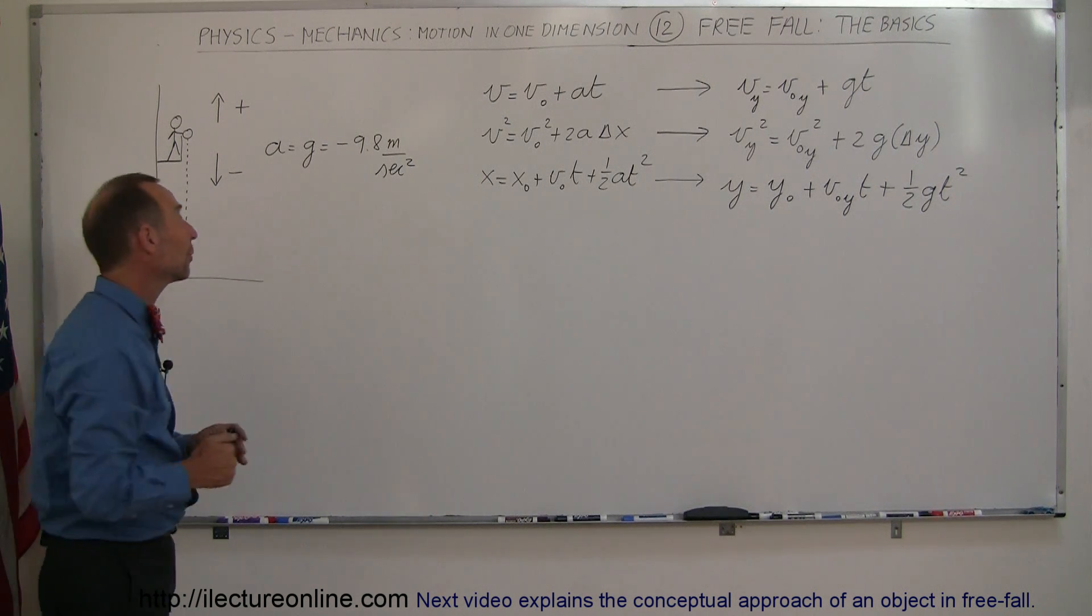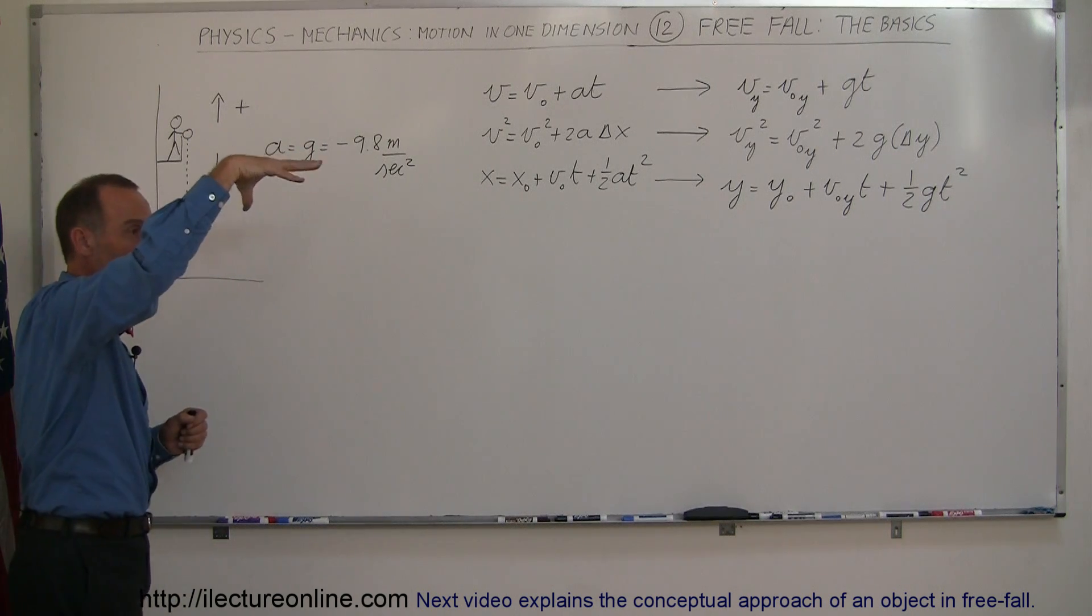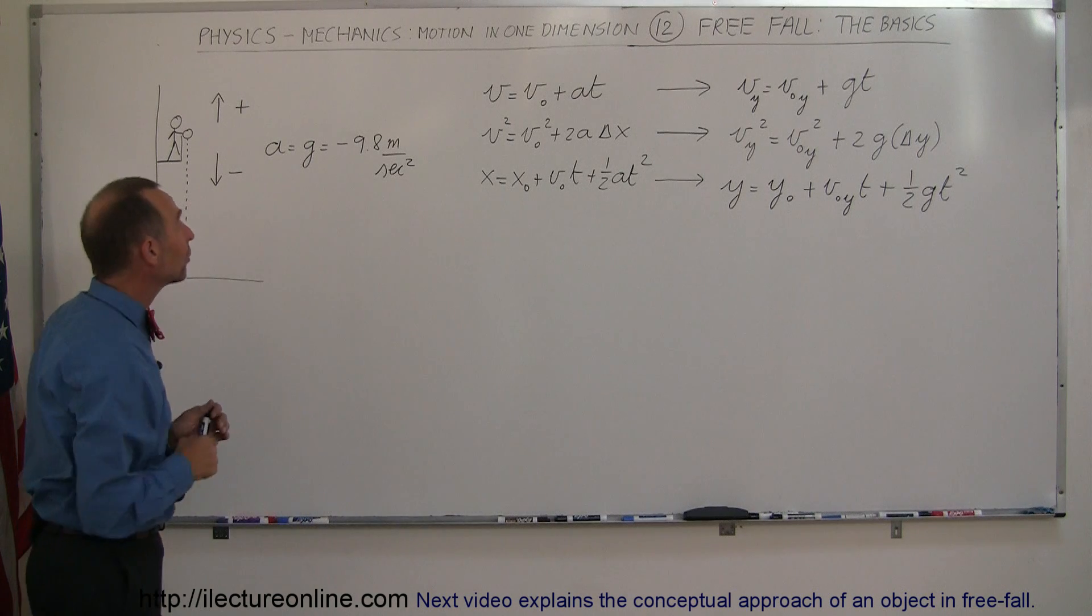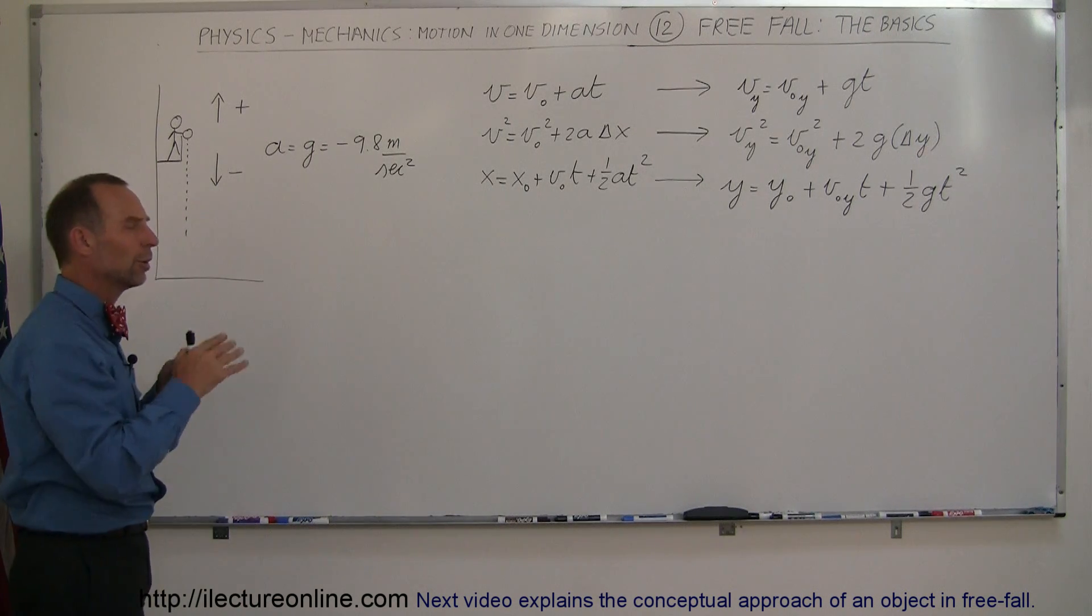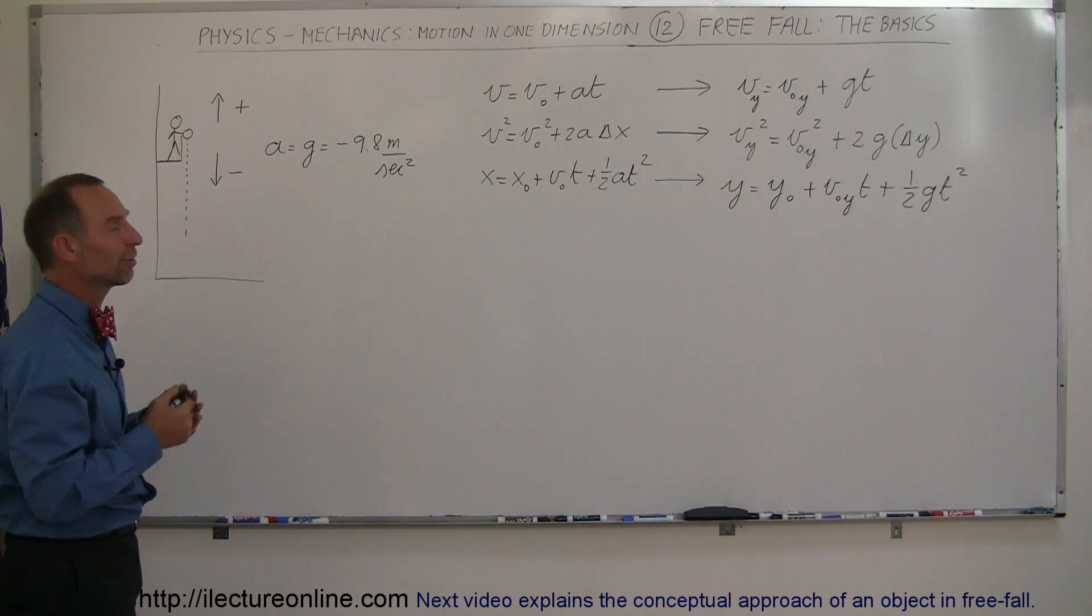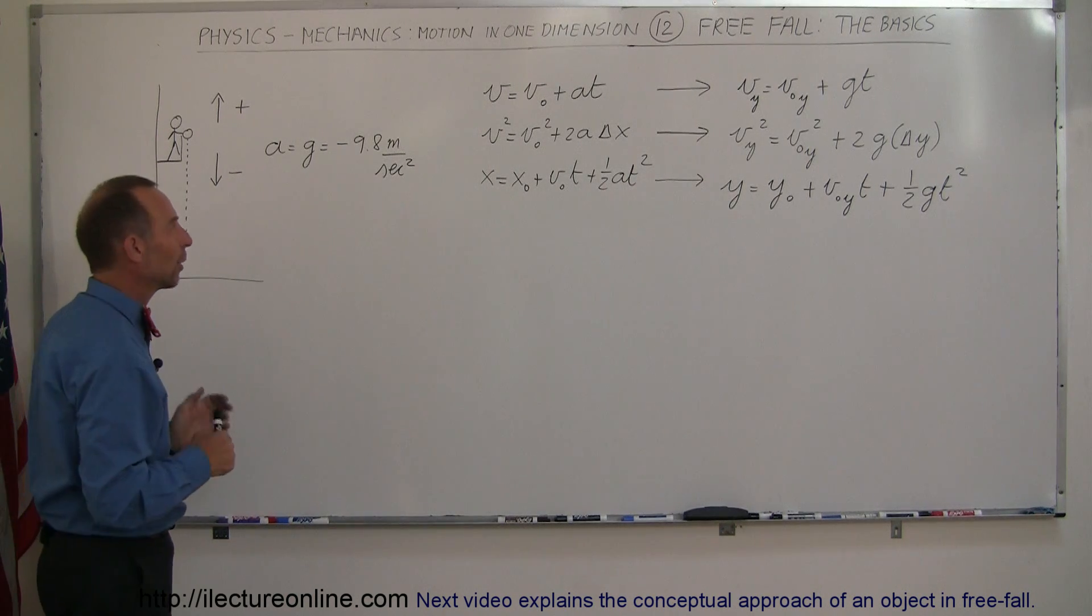The only difference here that we need to take into account is that with free fall we can simply drop the object down, we can actually throw it down to give it some initial velocity in the y direction downward, or we can throw it up to give it some initial velocity in the y direction upward. Remember when you throw it up it's a positive velocity, initial positive velocity, and when you throw it down it's an initial negative velocity in the y direction.